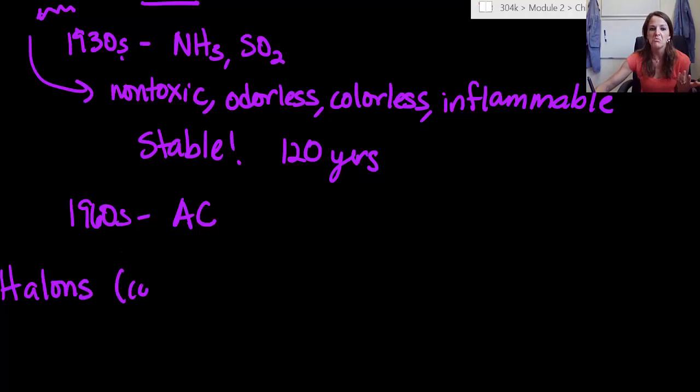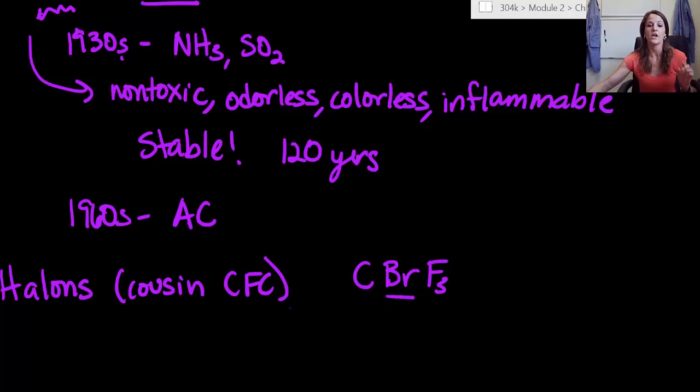But before I do that, I want to ask you a quick question. We also have these things called halons. Now, halons are like a cousin, maybe distant cousin, close cousin of a CFC. And so the big difference is that they have bromine in them instead of chlorine.